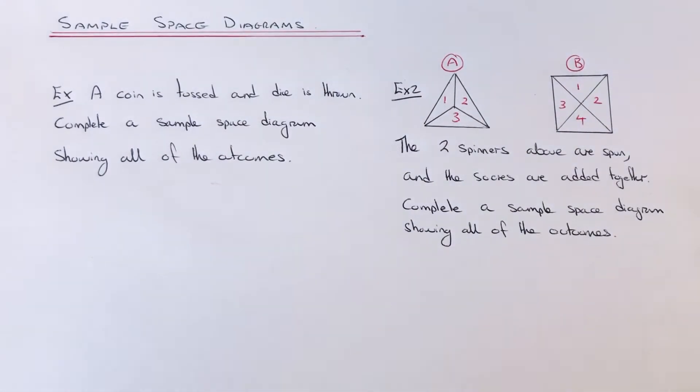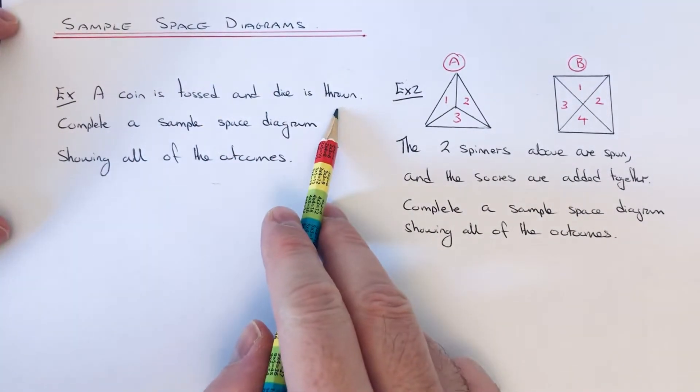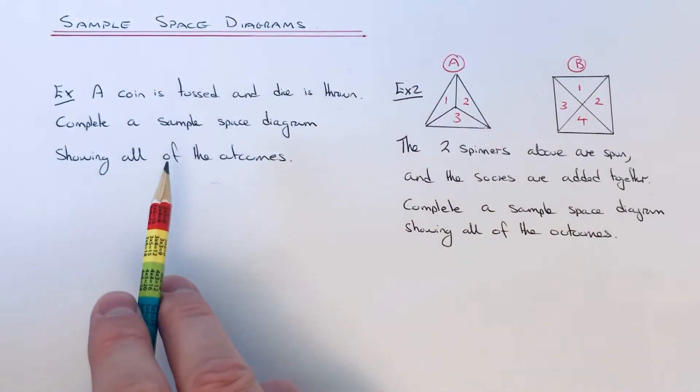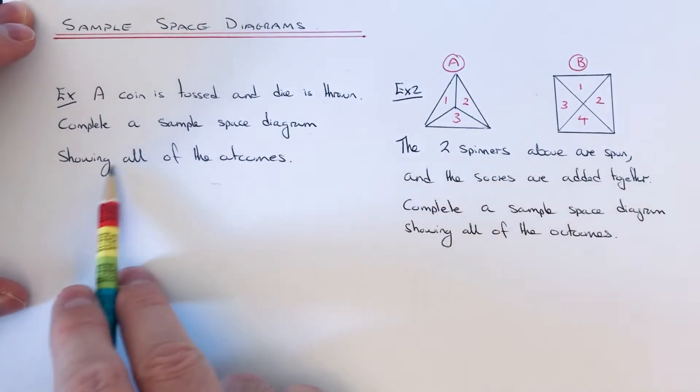It could be a coin and a dice, like the first example we've got here. So a coin is tossed and a dice is thrown - this is a normal dice with numbers one to six. Complete a sample space diagram showing all of the outcomes. It's a little bit like a two-way table.